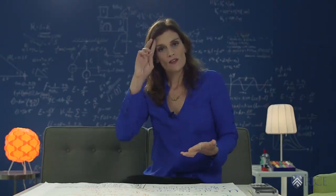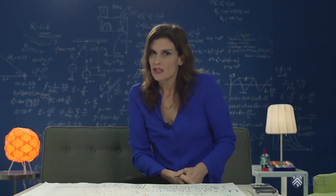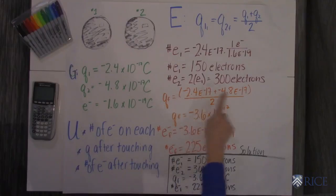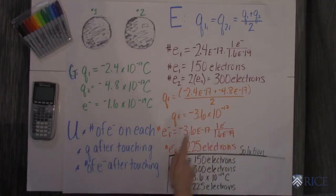To figure out the final charge, you basically just average them. They want to reach equilibrium, so you add the charges, divide by 2, and you get that the final charge on each sphere is negative 3.6 times 10 to the negative 17th coulombs.